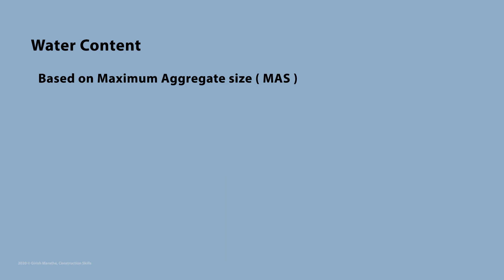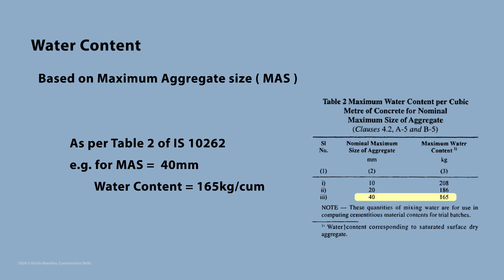The next step is estimation of water content. Water content is determined based on the maximum size of the aggregate. Check the maximum size of aggregates which are to be used on site and determine the maximum water content per cubic meter as per Table 2 of IS code 10262. For example, if the maximum size of aggregate to be used is 40 mm, water content shall be 165 kg per cubic meter.